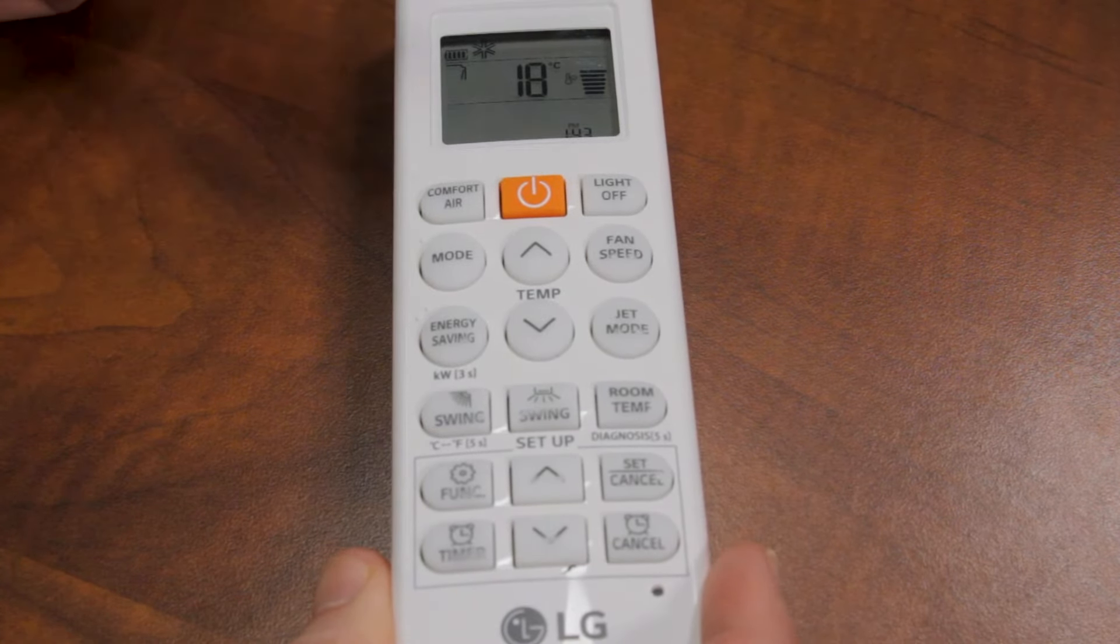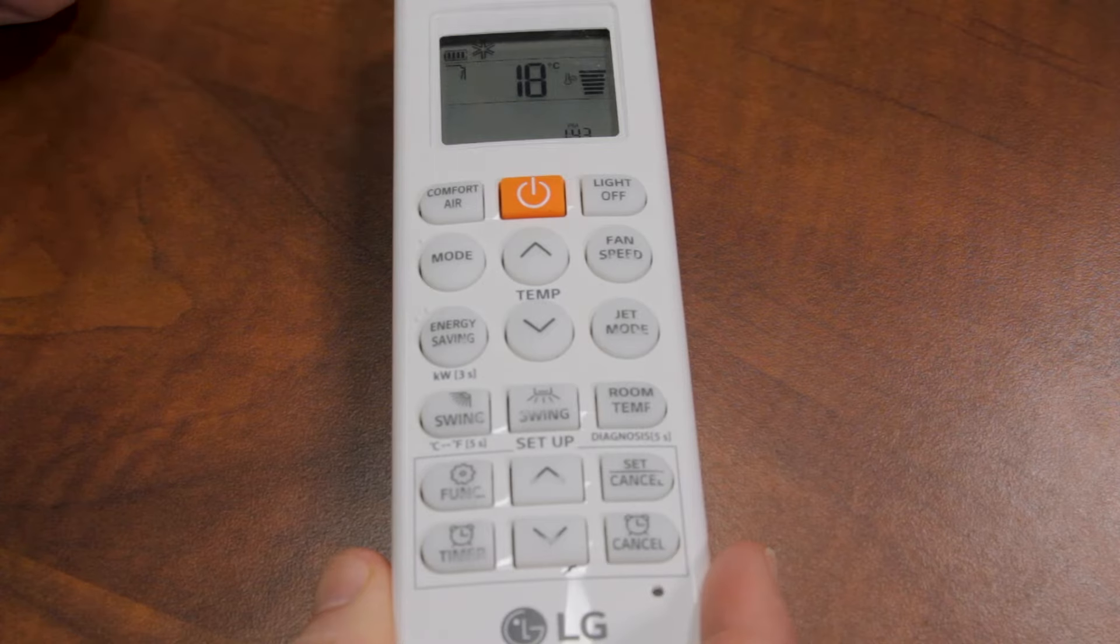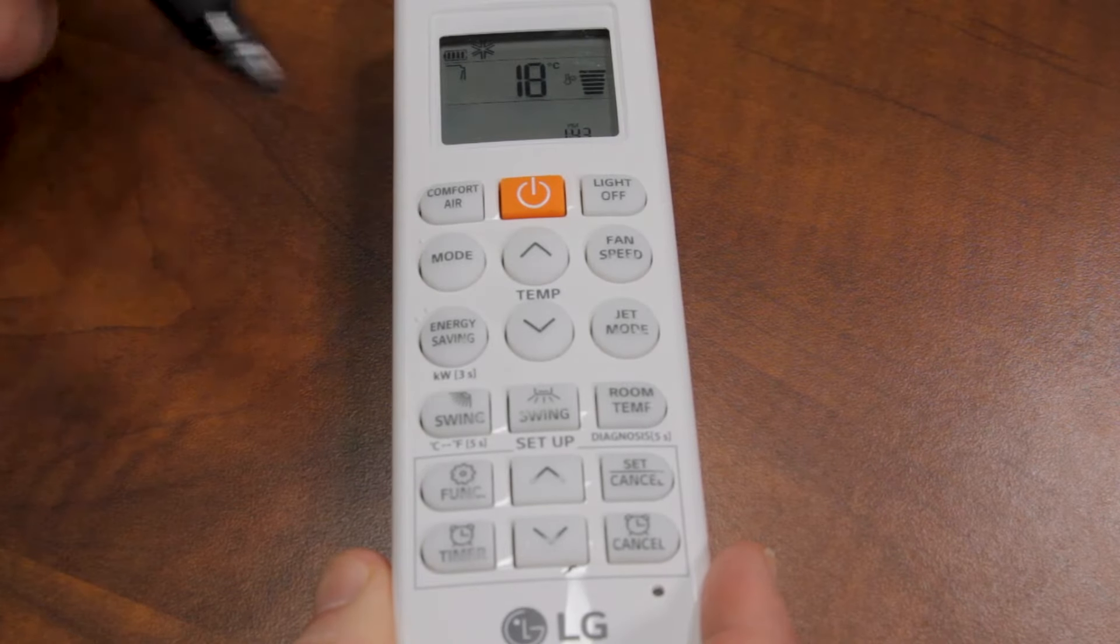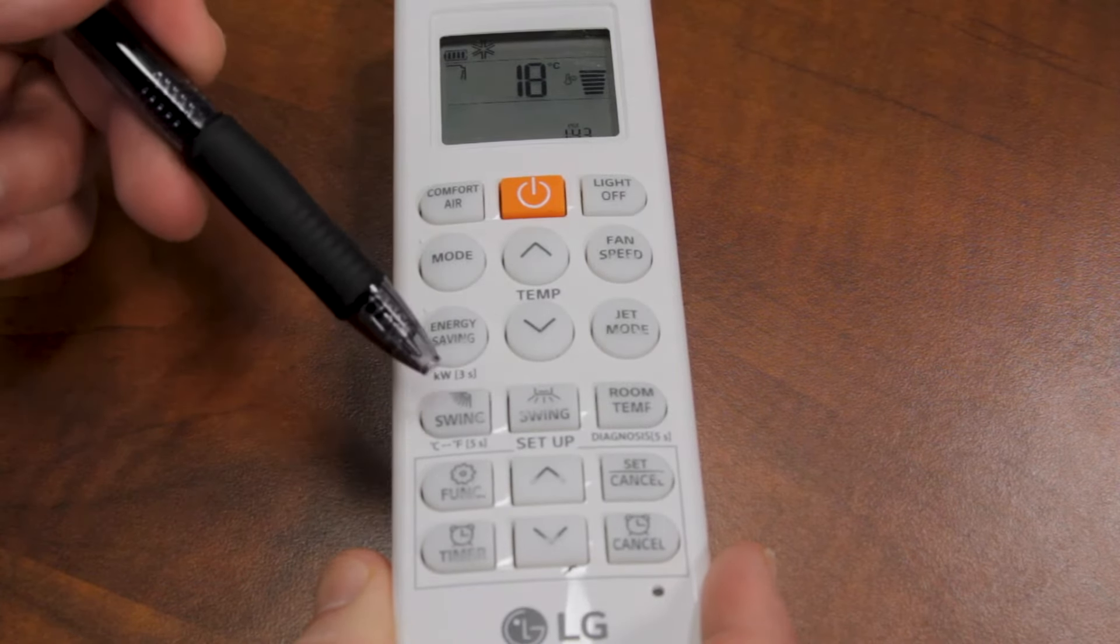As you can see, it comes set up in Celsius. If you want to change that to Fahrenheit, you press this button and hold it down for five seconds.